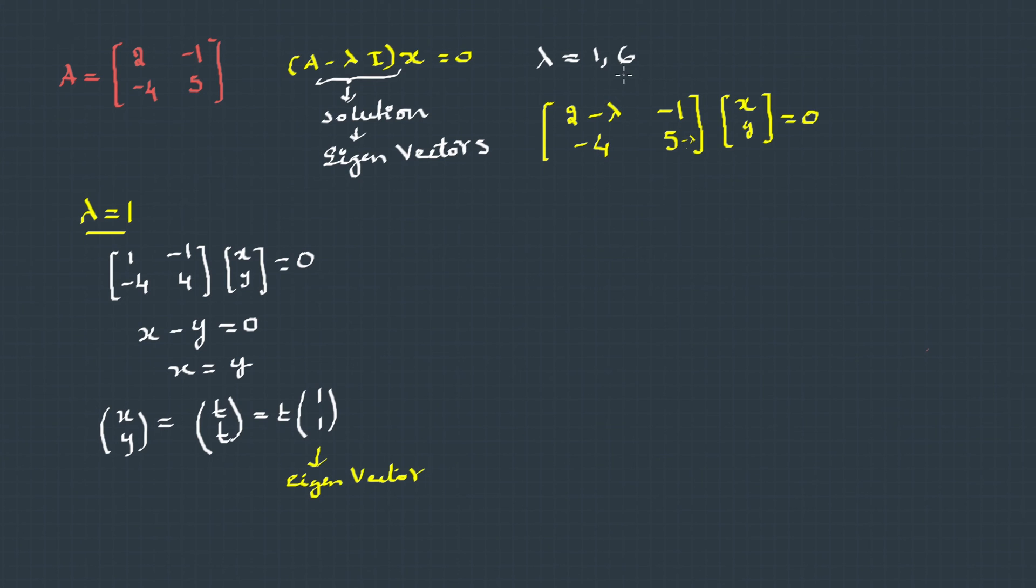Now let's find the second eigenvector for lambda equals 6. The equation becomes this, and when we open this it becomes -4x - y = 0, or we can write y = -4x.